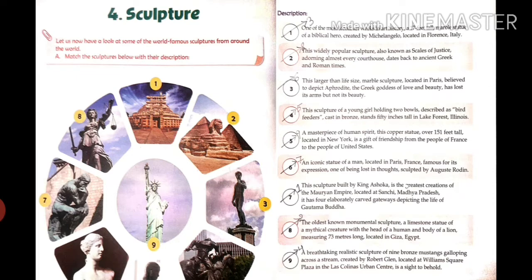Sixth one: an iconic statue of a man located in Paris, France, famous for its expression of being lost in thought, sculpted by Auguste Rodin. The sixth description is related to the seventh picture.